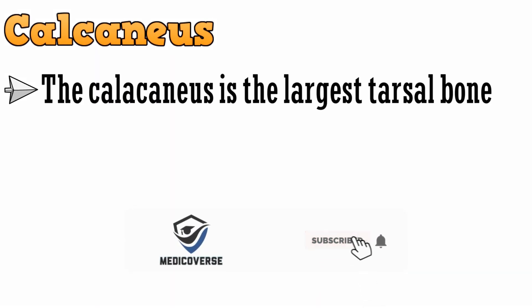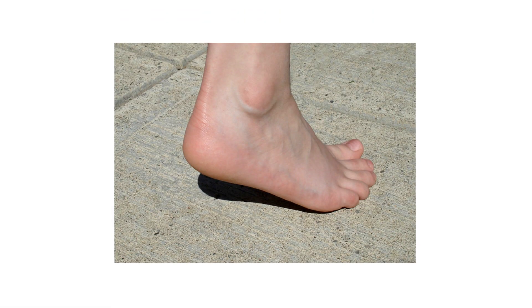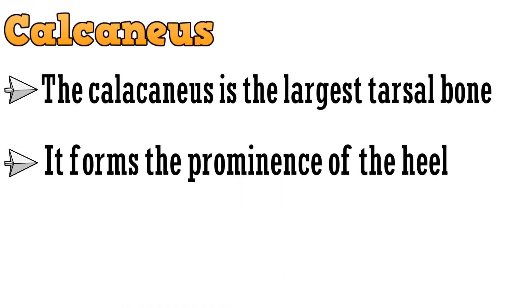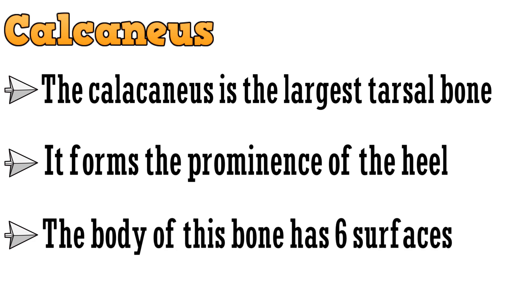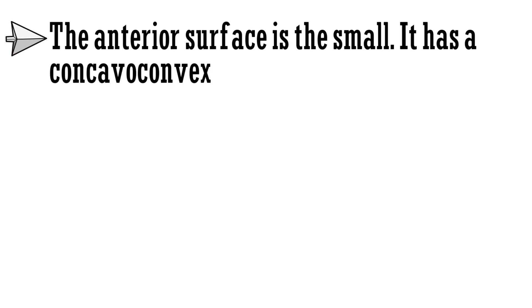Starting with the calcaneus. The calcaneus is the largest tarsal bone. It forms the prominence of the heel. The body of the bone has 6 surfaces. The anterior surface is small and has a concavo-convex articular surface for the cuboid bone.